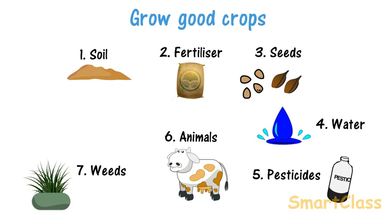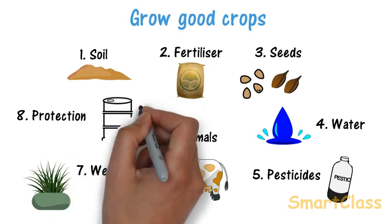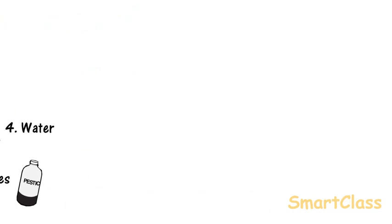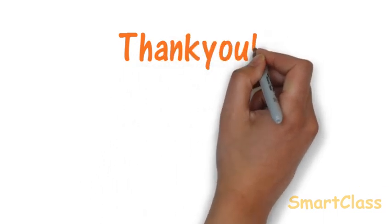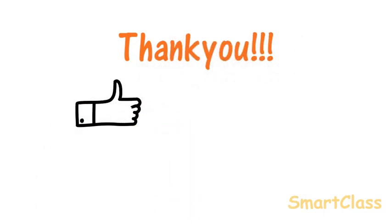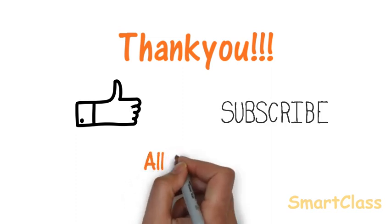Eight, the harvested crop should be protected from moisture, insects and small animals. Hence, they should be stored in a dry place or airtight container. Friends, that's all about plant life. Thank you for watching this video. Hope you liked it. Please like and share this video and subscribe to my channel. All the best.